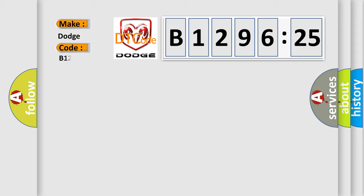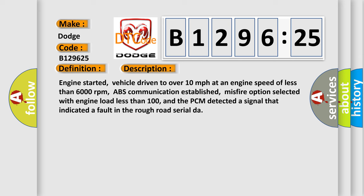So what does the diagnostic trouble code B129625 interpret specifically for Dodge car manufacturers? The basic definition is ABS rough road serial data malfunction.